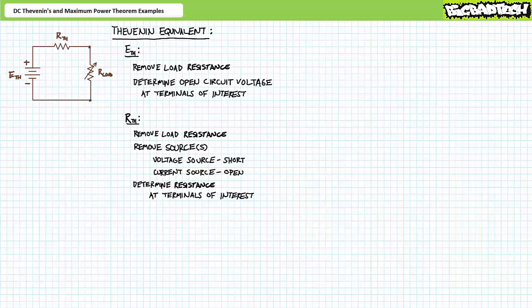To simplify a complicated circuit into its Thevenin's equivalent, we need to solve for two quantities: ETH and RTH. Additionally, the DC Maximum Power Transfer Theorem states that the maximum power will be transferred to a load resistor when the load resistor is equal in magnitude to the Thevenin's equivalent resistor.